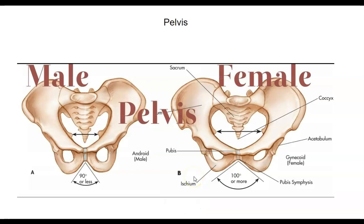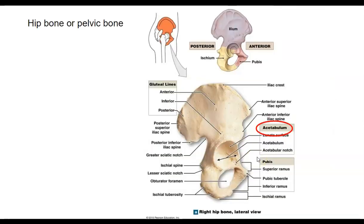Before we leave our discussion of the pelvis, let's point out one interesting feature: how to tell the difference between a male and a female pelvis. One easy way is to look at the pubic symphysis — the angle formed there for men is less than 90 degrees, and for women the angle is greater than 100 degrees. The only landmark I want you to know on the pelvic bone is the acetabulum, which is where the head of the femur articulates.